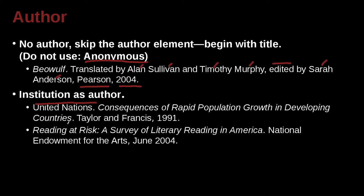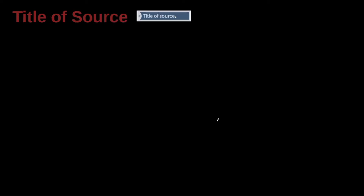Here's another example: Reading at Risk: A Survey of Literary Reading in America, National Endowment for the Arts, June 2004. But what happened here? We have nothing at the beginning — not even an organization name. Why? Because this is truly anonymous — we don't know who wrote this. However, it was published by the National Endowment for the Arts, which is a government organization. In that case, unlike the United Nations example, we skip the organization name at the start and just begin with the title of the publication.